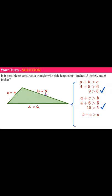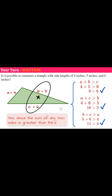And now our last inequality we need to check is sides B and C added together. 5 plus 6 is indeed greater than 4. Therefore, these three side lengths will form a triangle since the sum of any two sides is greater than the third.